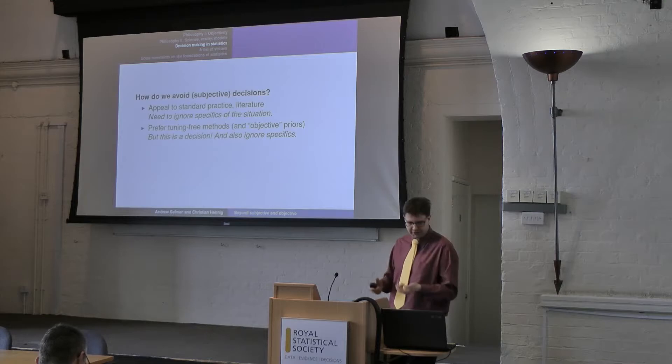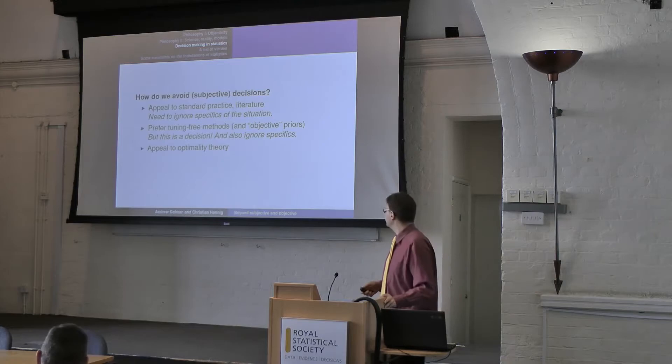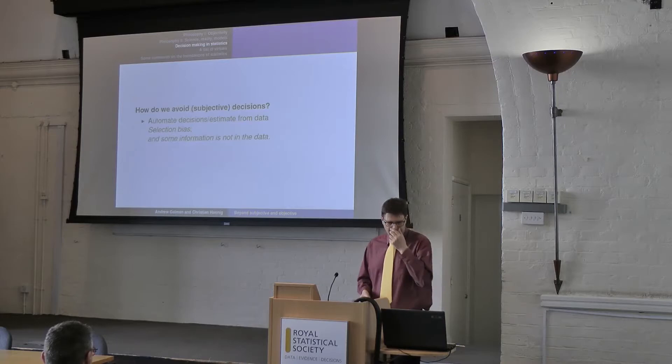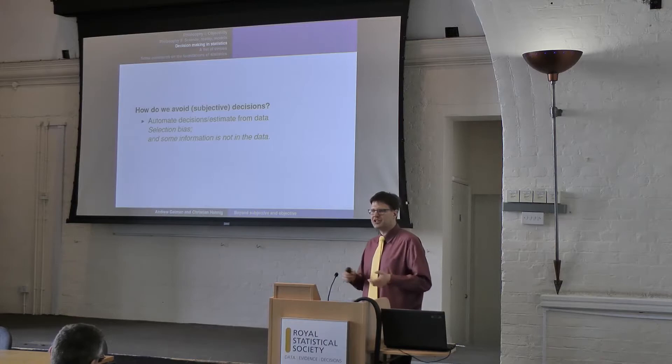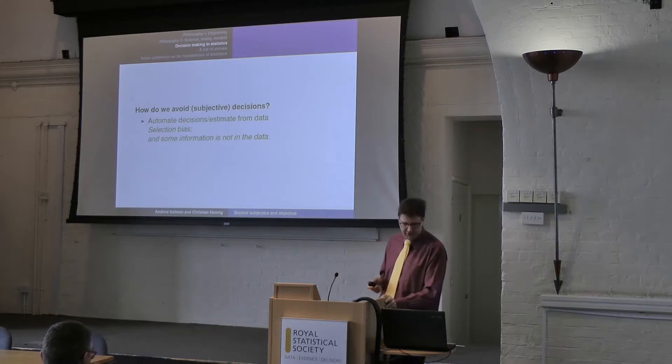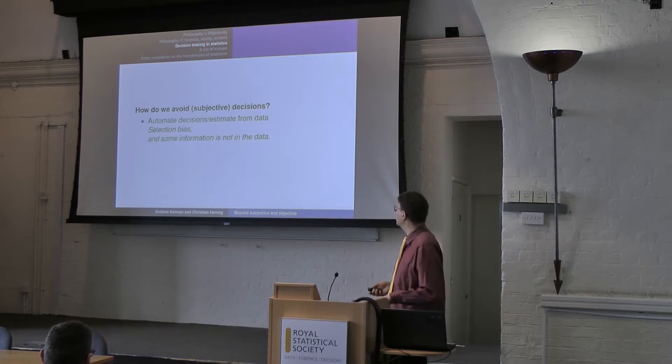There's much trying to be objective and avoiding subjective decisions. We could appeal to standard practice and literature, which often means ignoring specifics of the situation. We could choose methods so that we don't have to make decisions — objective priors are a version of this — but we need to realize this is itself a decision, taking away freedom that would allow us to take into account specifics. We could appeal to some optimality theory, which always has assumptions, and literally those assumptions never hold. Or, popular in the machine learning community, we could automate decisions or estimate them from the data, but this comes with selection bias, and certainly some information we need is not in the data.